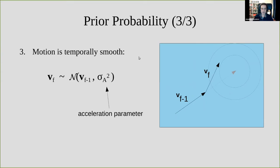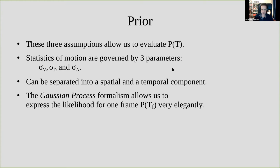Third, we assume the motion is also temporally smooth: the velocity of any particle does not change abruptly from frame to frame; instead, the velocity in frame f follows a normal distribution around its velocity in the previous frame f−1. The parameter σ_a describes how much acceleration there is — equivalently, the acceleration vector follows a normal distribution centered at zero. With these three assumptions we can construct a prior based on three parameters, separating it into spatial and temporal components.